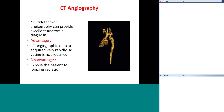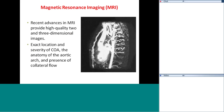CT angiography provides beautiful images of coarctation — the distribution, the association of head and neck vessels, the position of the ductus — everything. Multi-detector CT angiography offers excellent diagnosis; it is acquired very rapidly and sedation is not required, though it involves radiation exposure. MRI gives much clearer images but for neonatal coarctation we usually don't go for MRI since echo and CT angio are sufficient.